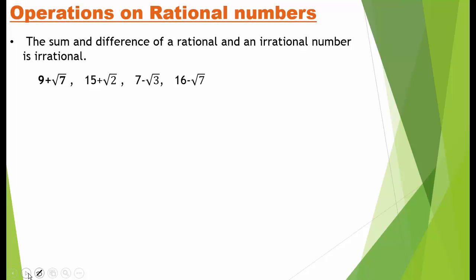For example, 9 plus root 7: 9 is a rational number and root 7 is an irrational number, so their sum is irrational. Similarly, 15 plus root 2: 15 is rational and root 2 is irrational, so this is again irrational. Now, 7 minus root 3 and 16 minus root 7 are both irrational numbers.